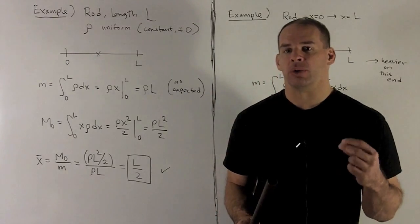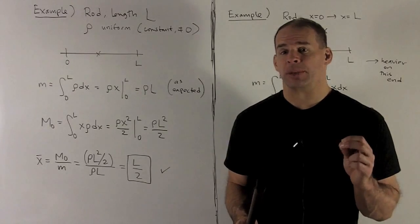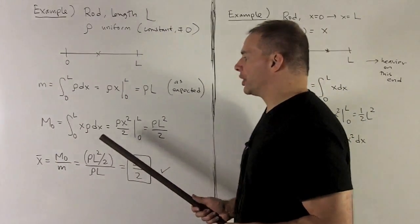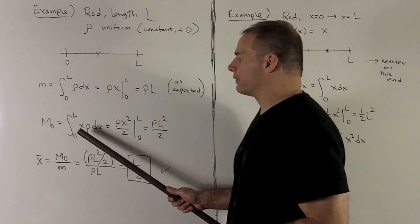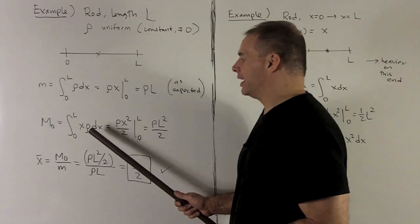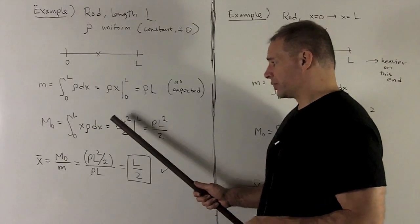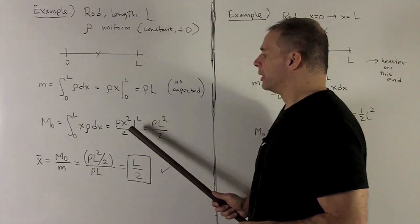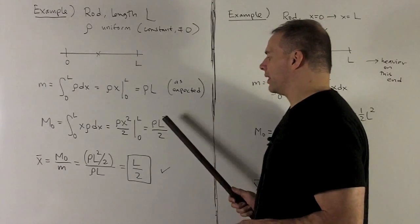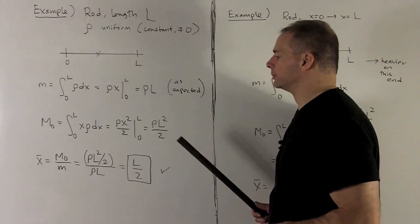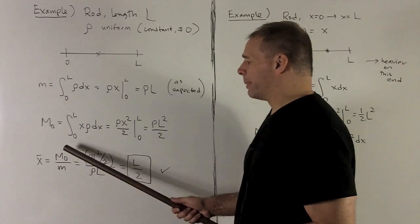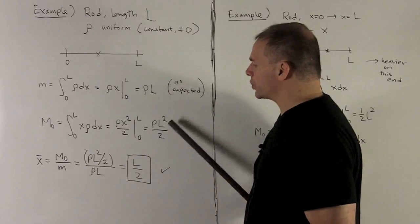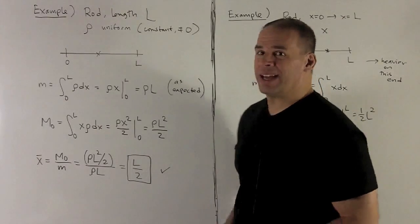That gives us ρL — exactly what we expect: mass equals density times length. For the moment about the origin, it's the definite integral from 0 to L of x·ρ dx. The constant pulls out, and the antiderivative of x is x²/2. Evaluating at L and 0 gives ρL²/2. The center of mass is the moment divided by the total mass: (ρL²/2) / (ρL) = L/2, as expected.